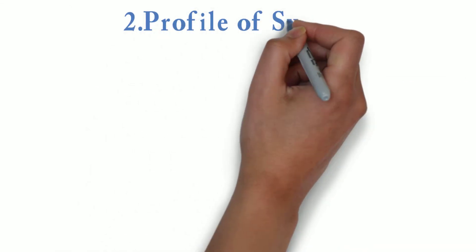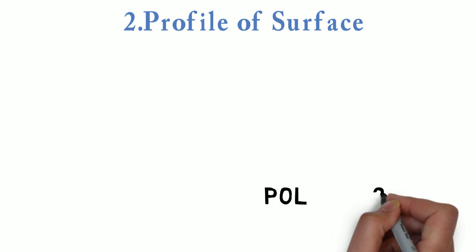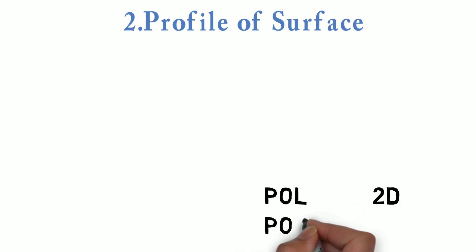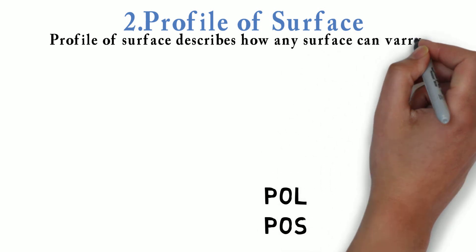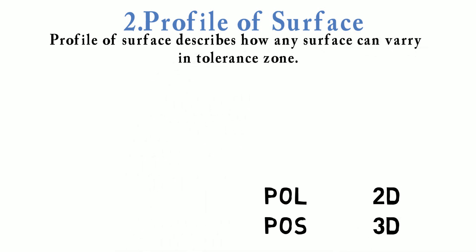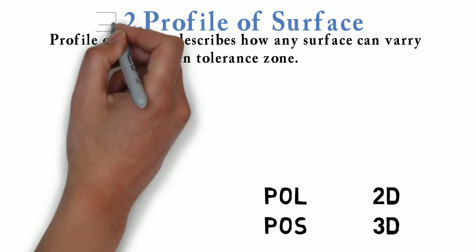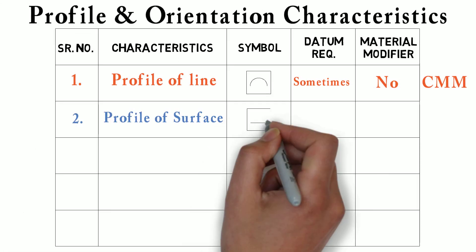The second tolerance is profile of surface. Profile of surface is similar to profile of line. Profile of line is a 2D entity, whereas profile of surface is a 3D entity. Profile of surface describes how any surface can vary in the tolerance zone. Profile of surface controls all the points along the surface within the tolerance range. We denote profile of surface with this symbol.